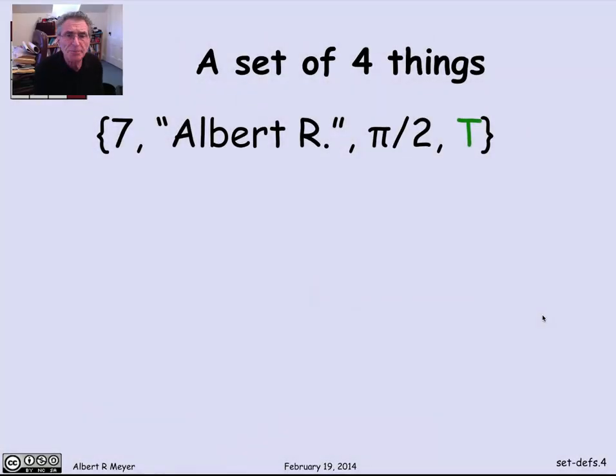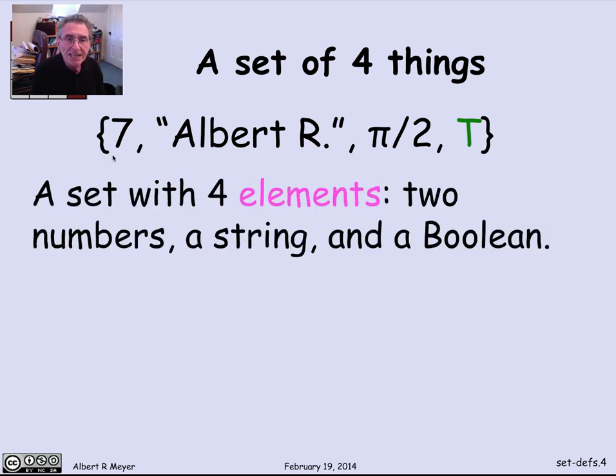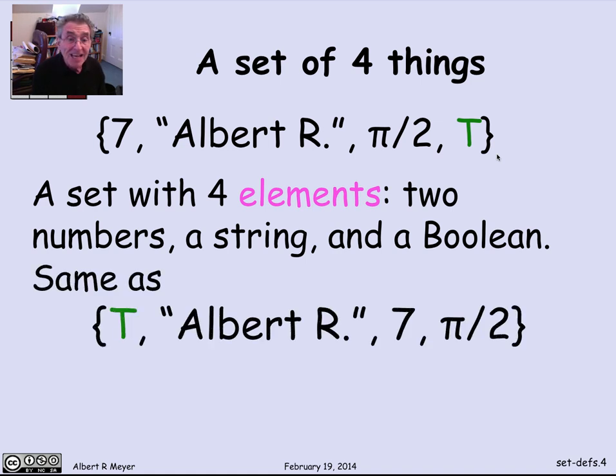Let's look at an example to pin things down. Let's look at this set of four things. Namely, it's got two numbers, pi over 2 and 7, a character string in quotes, Albert R, and the Boolean value true. So those are the four different things in it. They're of mixed type. And you might not like to have a mixed type like this in a programming language, but mathematicians don't worry about such things very much.